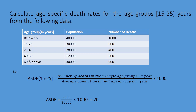The result is 20. So the ASDR is 20, meaning the death rate for the age group 15 to 25 years is 20 per 1000 individuals.